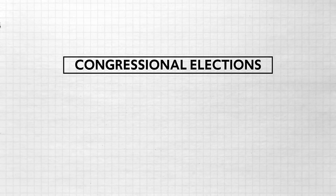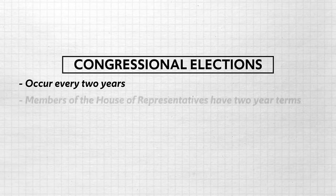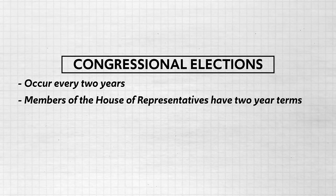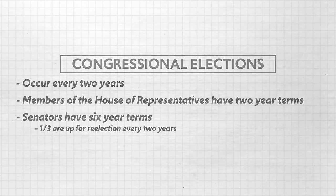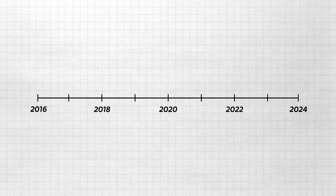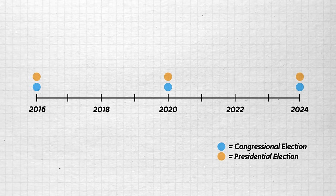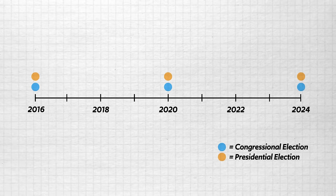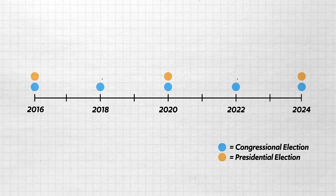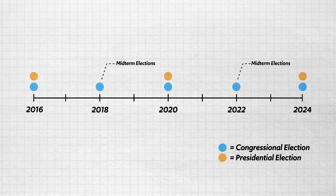So first, the basics. Congressional Elections happen every two years. Members of the House of Representatives have two-year terms, and Senators have six-year terms, but one-third of them are up for re-election every two years. Since the President is elected every four years, half the time Congressional Elections correspond with the Presidential Election. The elections that happen two years later are called Midterm Elections because they happen halfway through the Presidential term.